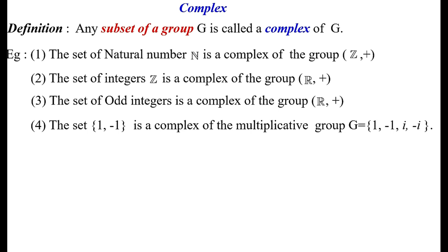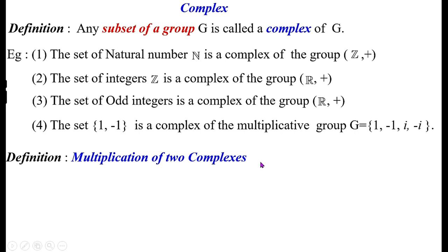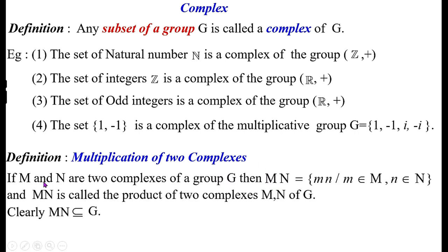Now we consider the multiplication of two complexes. If M and N are two complexes of a group G, that is M and N are subsets of G, then the product M·N is defined as the set of all elements m·n such that m is from M and n is from N. M·N is called the product of the two complexes M and N of G. Clearly M·N is also a subset of G.